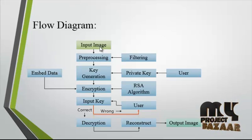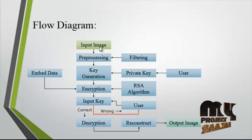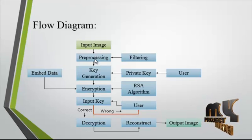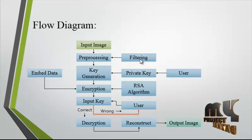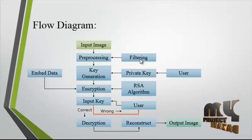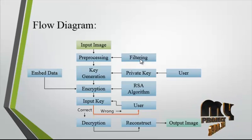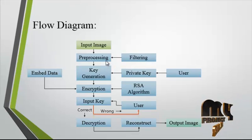First, the input image is taken from the dataset. Then the image undergoes pre-processing. In the pre-processing, we consider filtering, which is the removal of noise from the image. We use the Gaussian filter method to remove the noise from the image, and hence the Gaussian filter is applied in the pre-processing step.